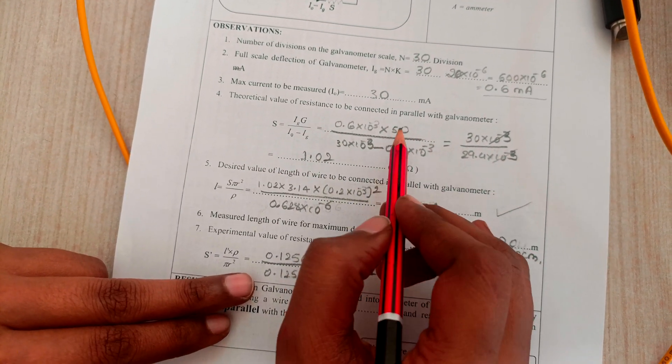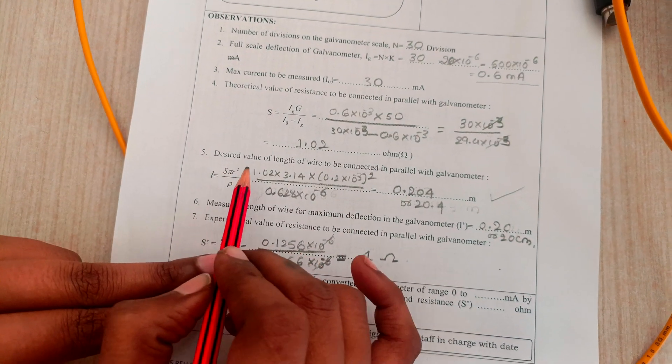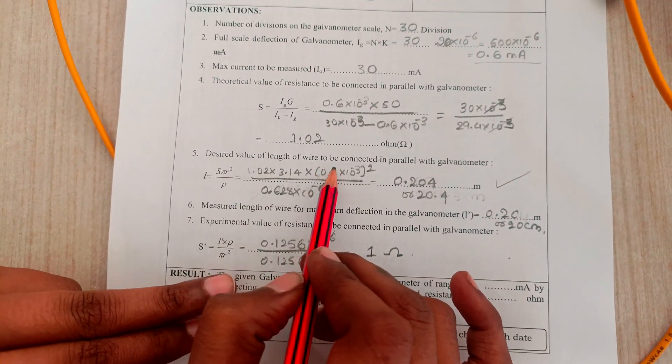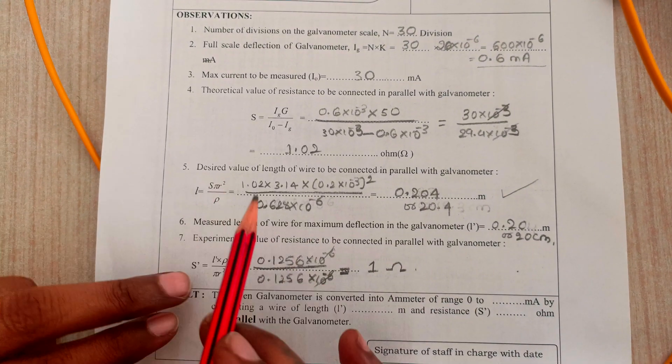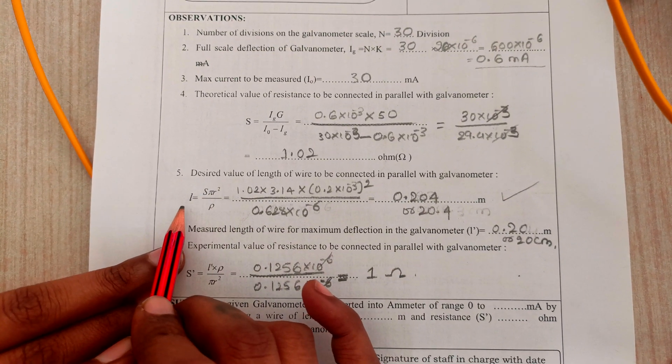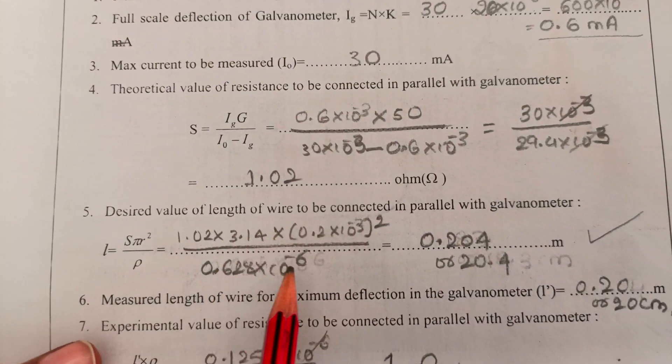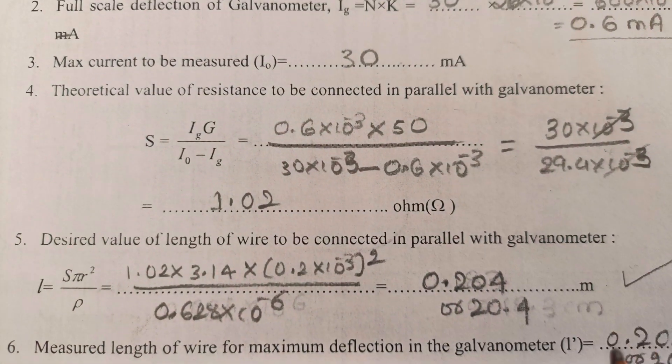The desired value of length to be connected in parallel with the galvanometer also needs to be calculated. L is equal to, by substitution using all the data, we are getting it as 20 cm or 0.2 meters.